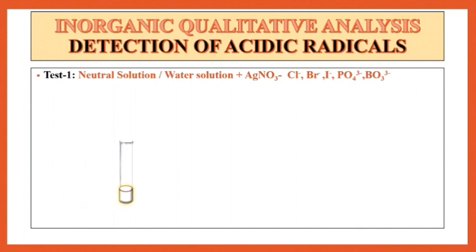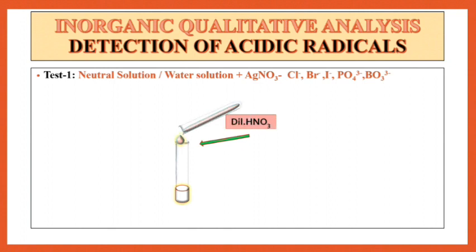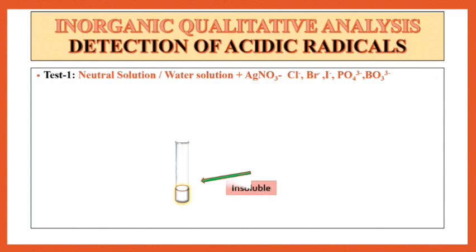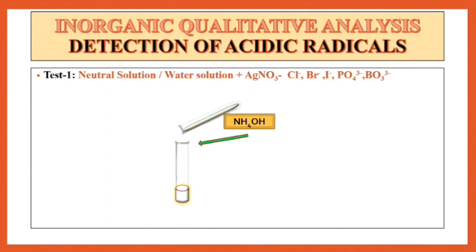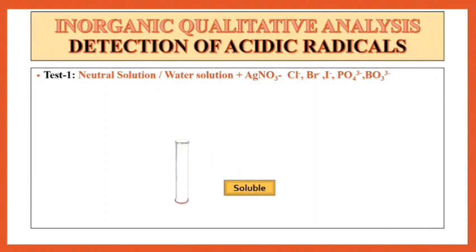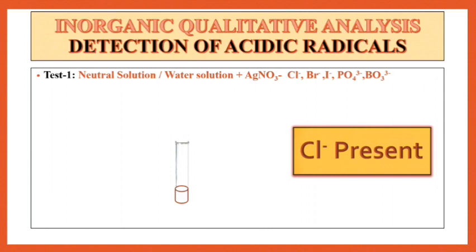If a curdy white precipitate is obtained, then to this curdy PPT add dilute HNO3 drop wise. It is insoluble. Now to the same solution, add NH4OH drop wise. It is soluble — it means that Cl⁻ is present in the mixture.